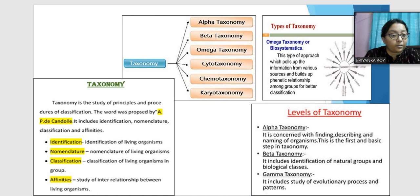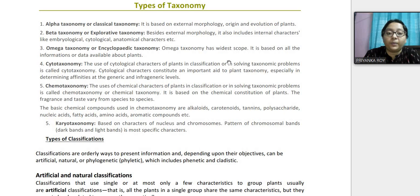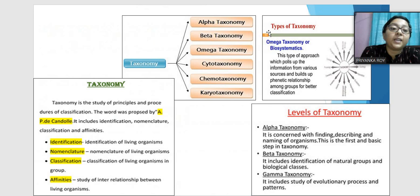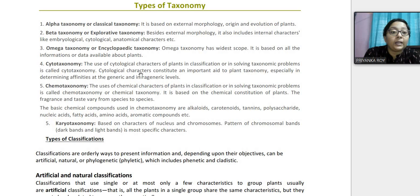Omega taxonomy has the widest scope — it is based on all available information from various sources regarding a particular organism and builds relationships among groups for better classification. Cytotaxonomy is when grouping is done on the basis of cellular characteristics — 'cyto' means cell. Chemotaxonomy uses chemical characters of plants such as alkaloids, carotenoids, and tannins as the basis for grouping. Karyotaxonomy is based on the characters of the nucleus and chromosomes — 'karyon' means nucleus.